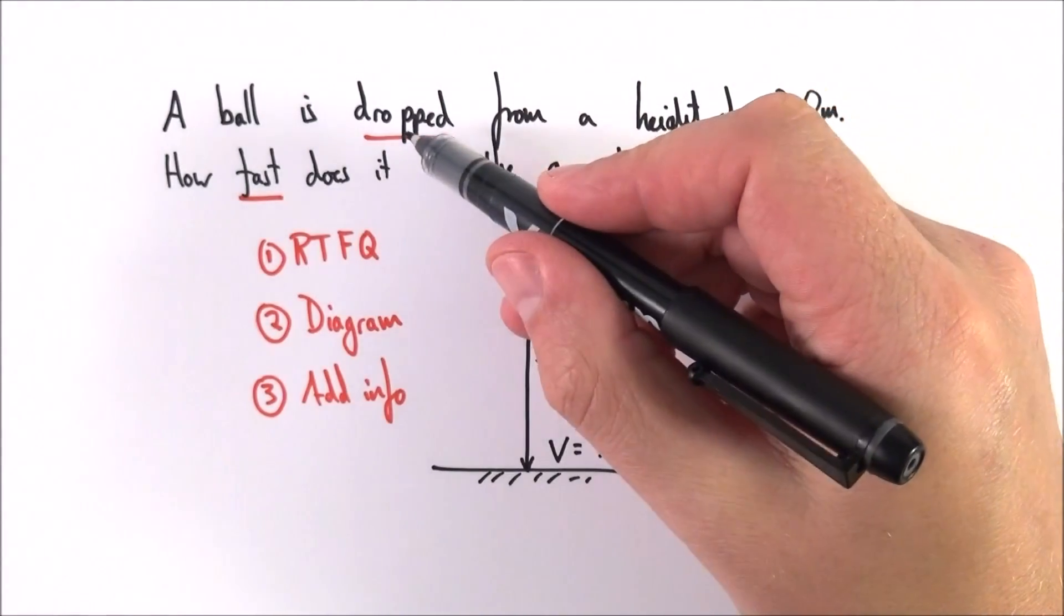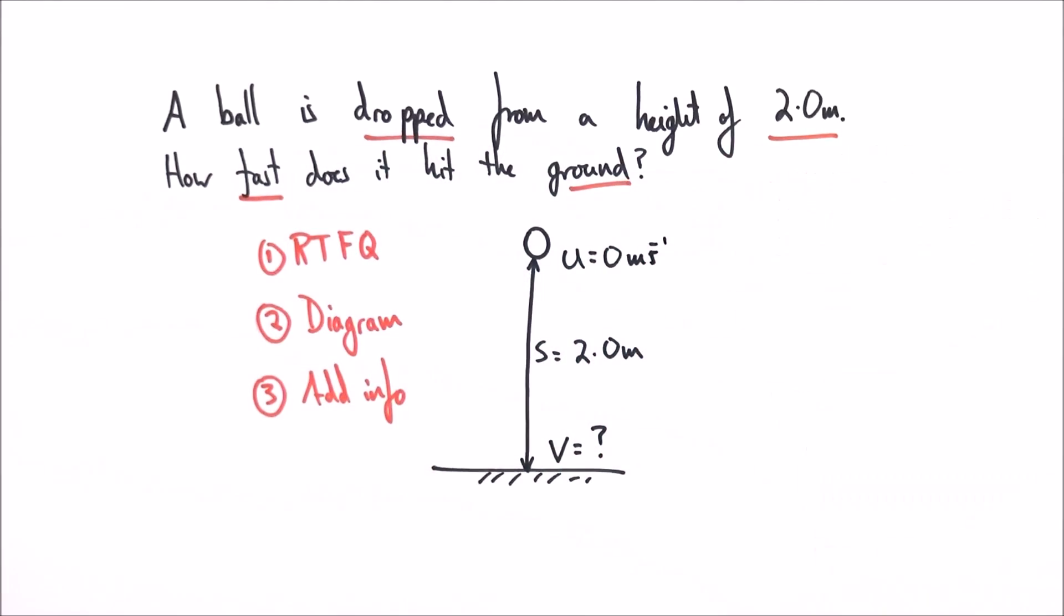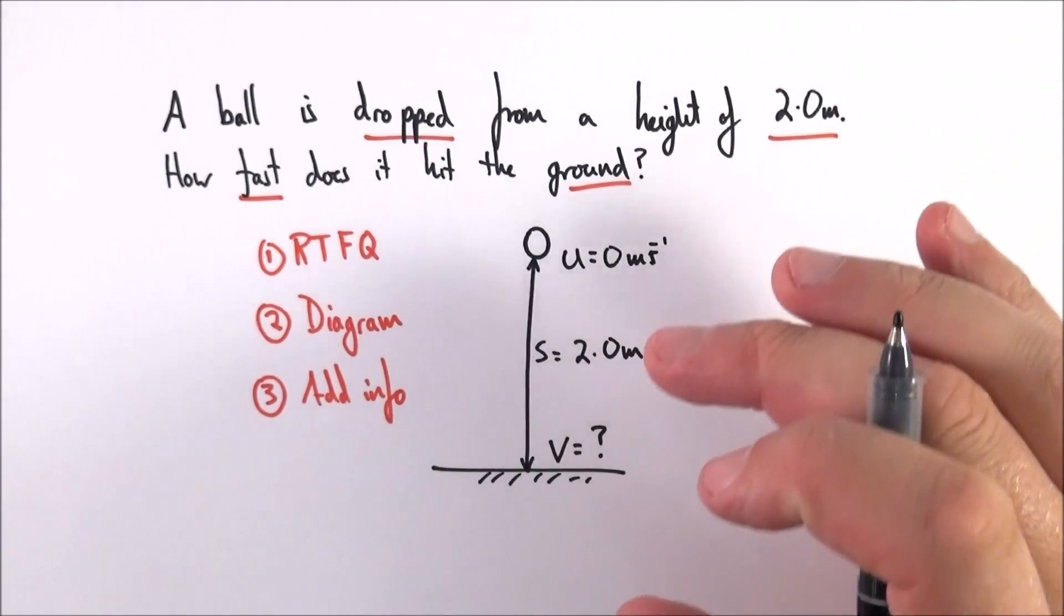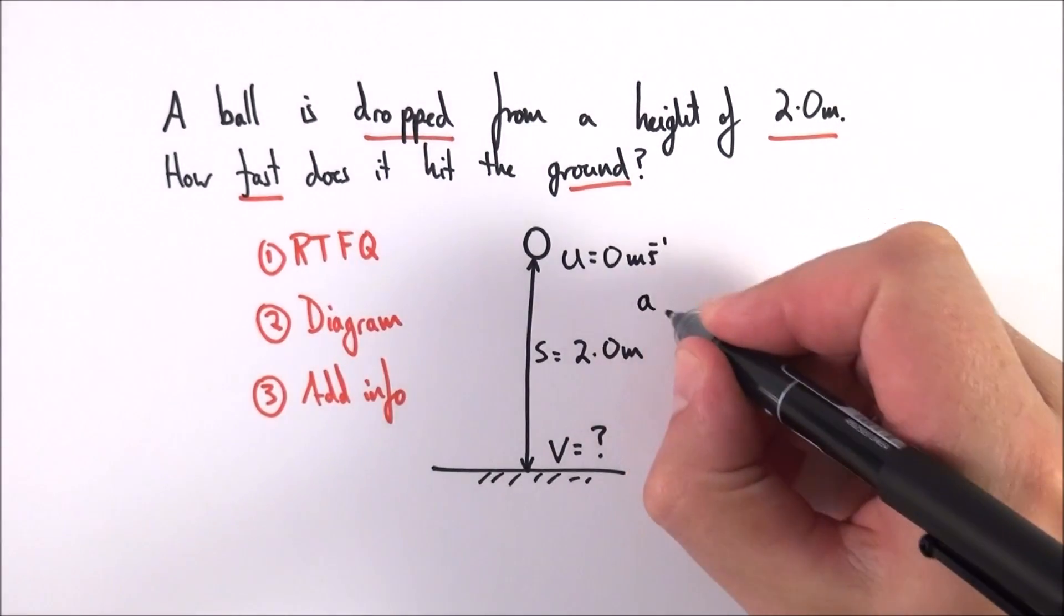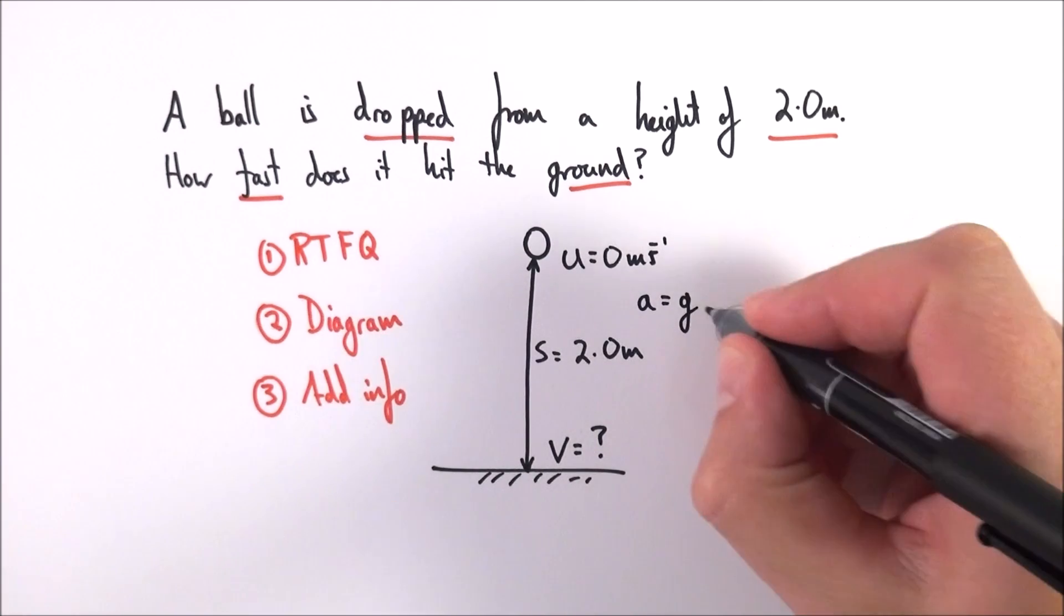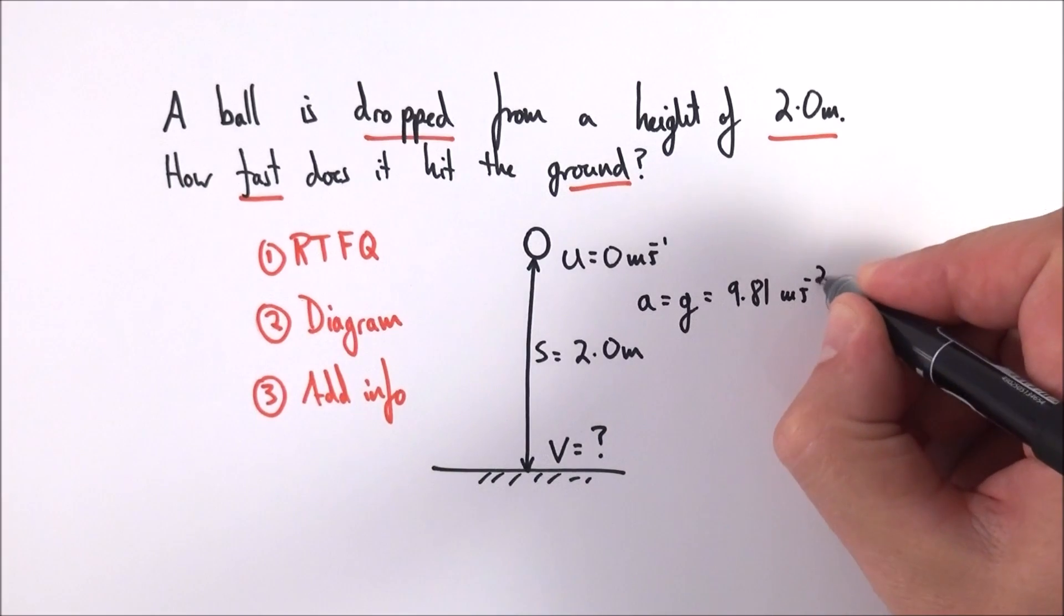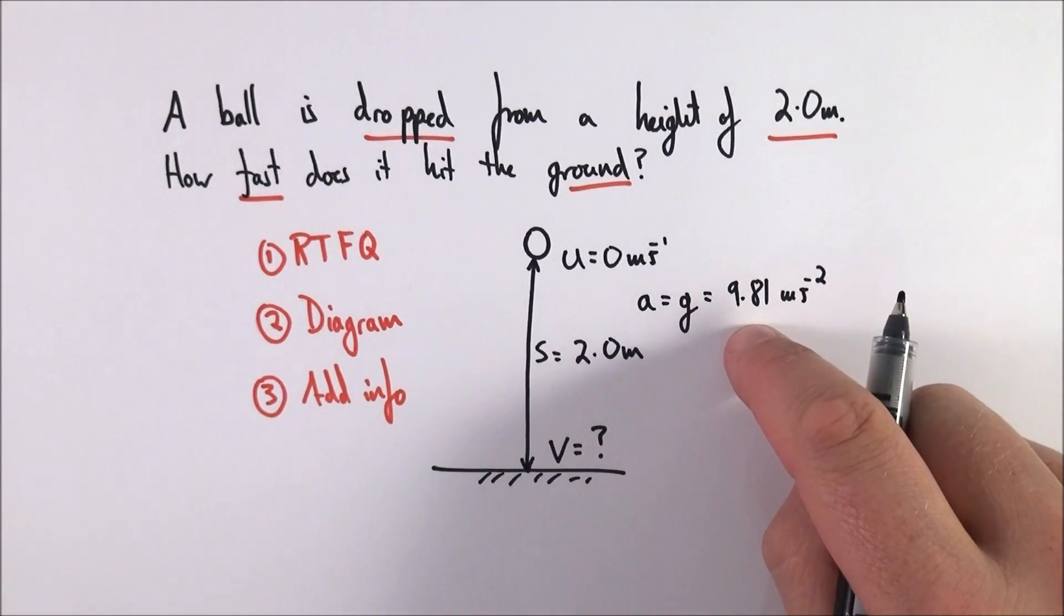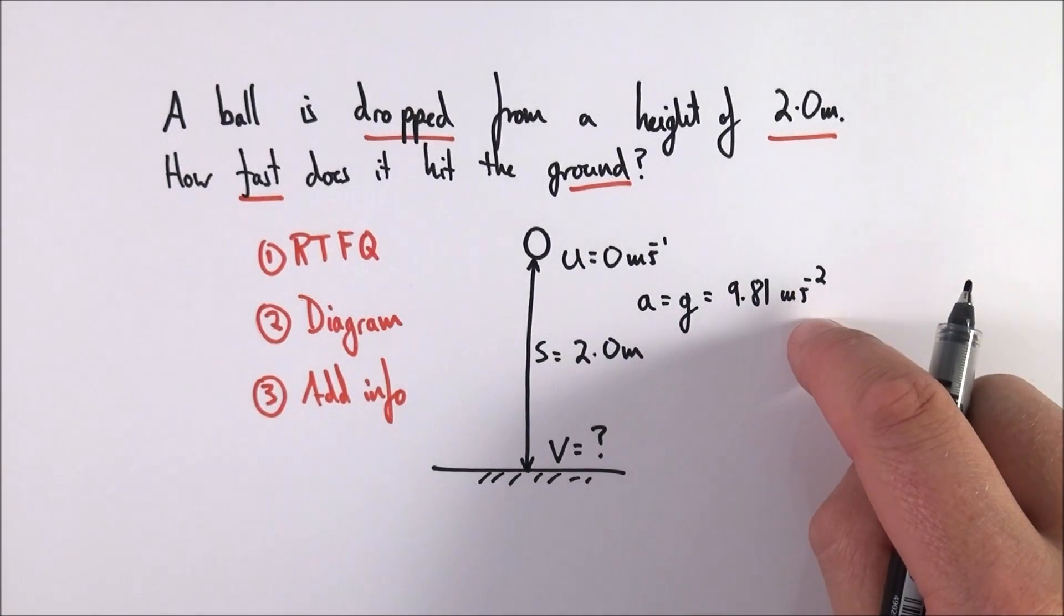Because the ball is dropped, that means the initial velocity is equal to zero meters per second. We're going to assume this is on the earth, and therefore the acceleration is equal to the gravitational field strength which equals 9.81 meters per second squared. That's the number that I got from within my data book, and I wrote it down in SI units with the correct units.